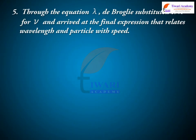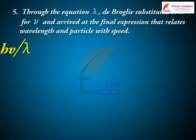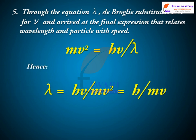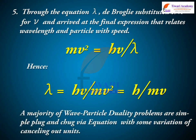Step 5: Through the relationship ν = v/λ, De Broglie substituted and arrived at the final expression relating wavelength and particle speed: mv² = hv/λ. Hence, λ = hv/mv² = h/mv.